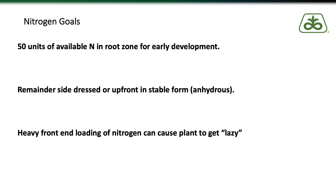Thinking about nitrogen programs overall, one of our goals here in Northeast Iowa is to have around 50 to 75 units of nitrogen that we call highly available early on. This will get us through that V6 to V8 timeframe shown on the earlier chart. After that, we can count on our stable form of anhydrous to carry us through the rest of the year, or we can put on the rest of our nitrogen through side-dress or Y-drop applications. We've found it is critical to have at least 50 units of highly available nitrogen early on to take care of what they call the carbon penalty and ensure availability while the corn plant is waiting to get root systems down to the anhydrous.